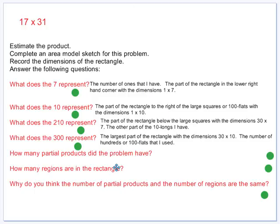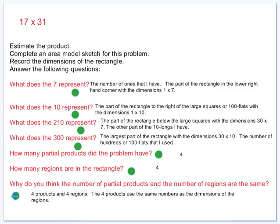How many partial products did the problem have? I would assume that there would be 4 since there are 4 digits in our numbers that we're multiplying. How many regions are in the rectangle? Should be the same, 4. And then why do you think the number of partial products and the number of regions are the same? The 4 products use the same numbers as the dimensions of the regions. So we should have a 4 by 4.